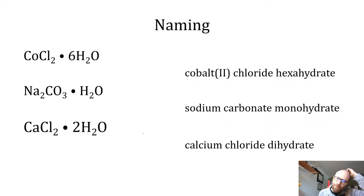Just as a brief stopping point for naming, the name of these compounds, you actually name the number of waters with a prefix. So that's cobalt 2 chloride hexahydrate, sodium carbonate monohydrate, and calcium chloride dihydrate. The whole thing is called a hydrate as a whole, but they have specific names.